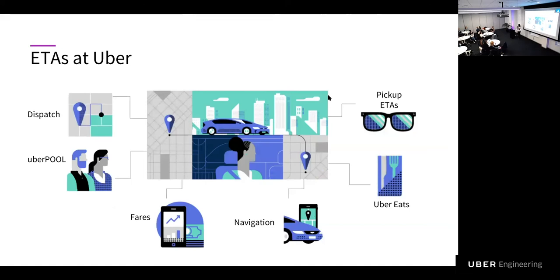ETAs are a very key decision variable in engineering, data science and business operations. They're used across multiple teams, starting from dispatch, which tries to find the best car to pick you up, and then UberPool, fares, navigation, Uber Eats, and pickup team. And then how do ETAs interact with us who take the trips? Who use Uber as an app? Let's take a trip and look at that.